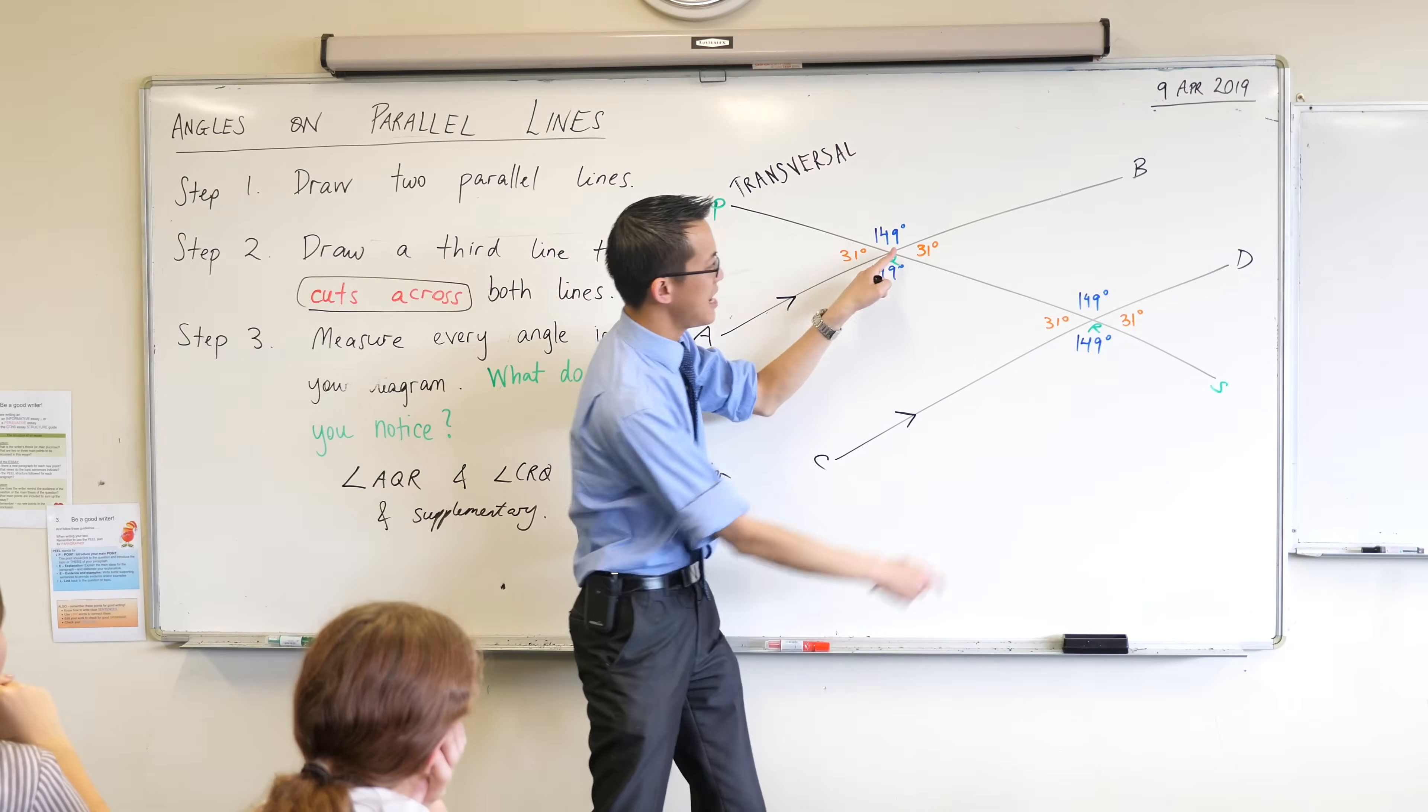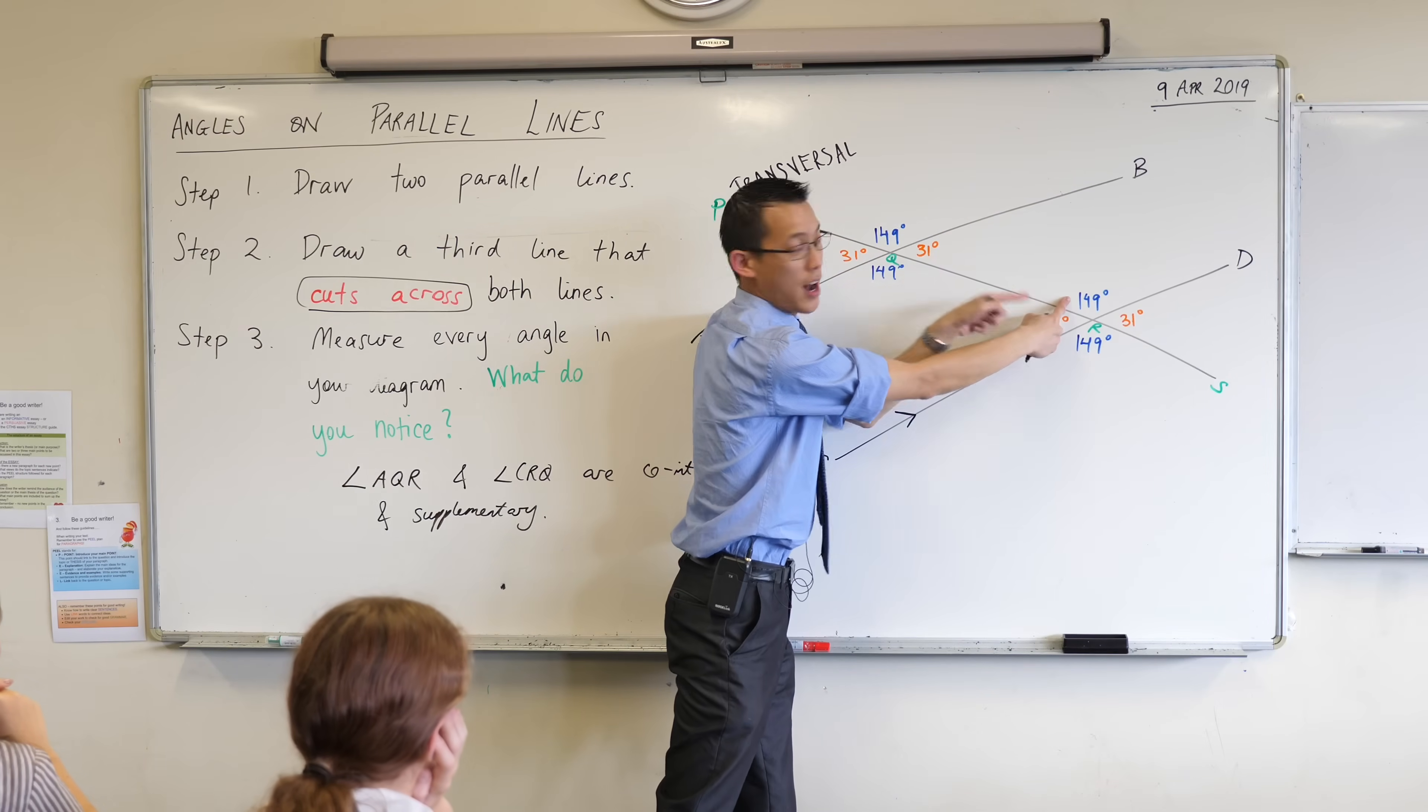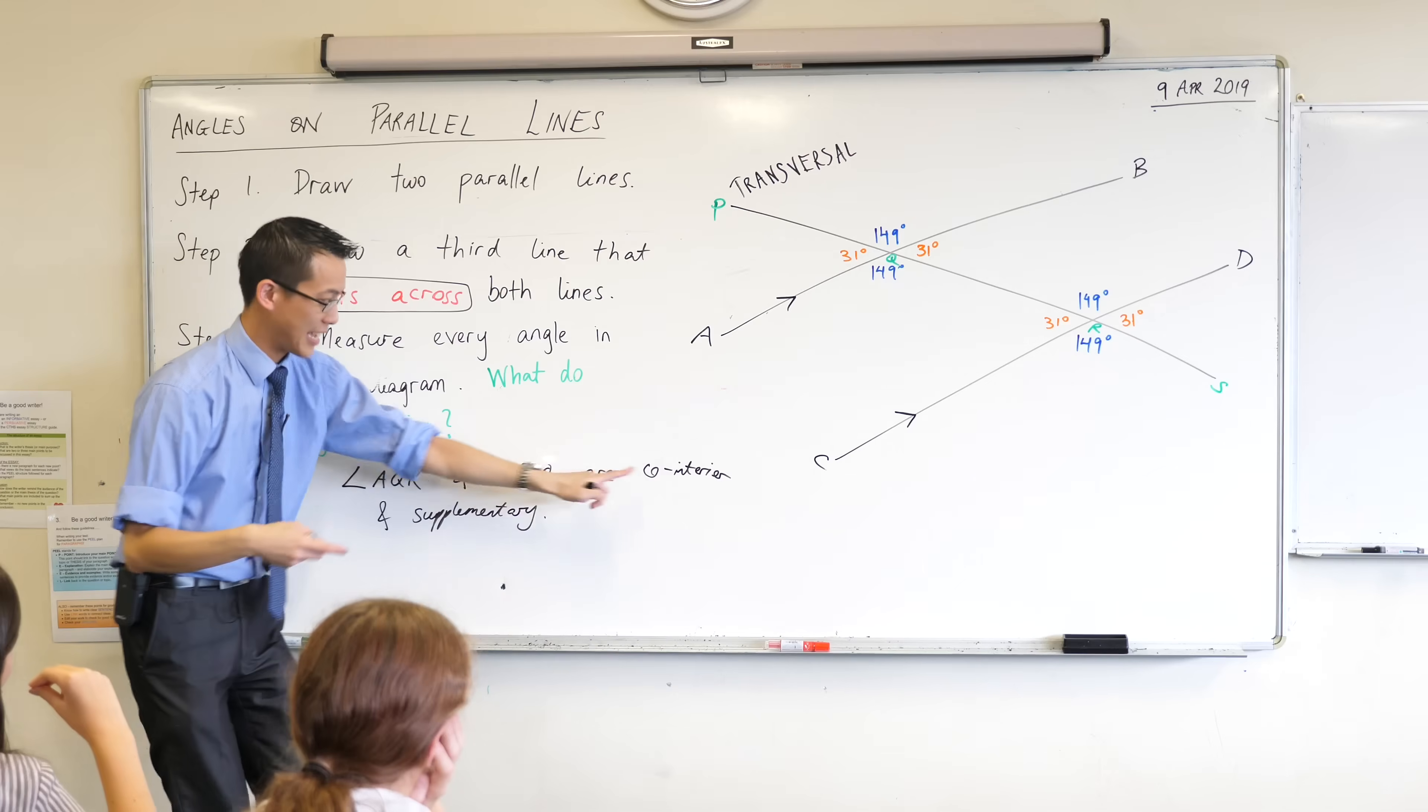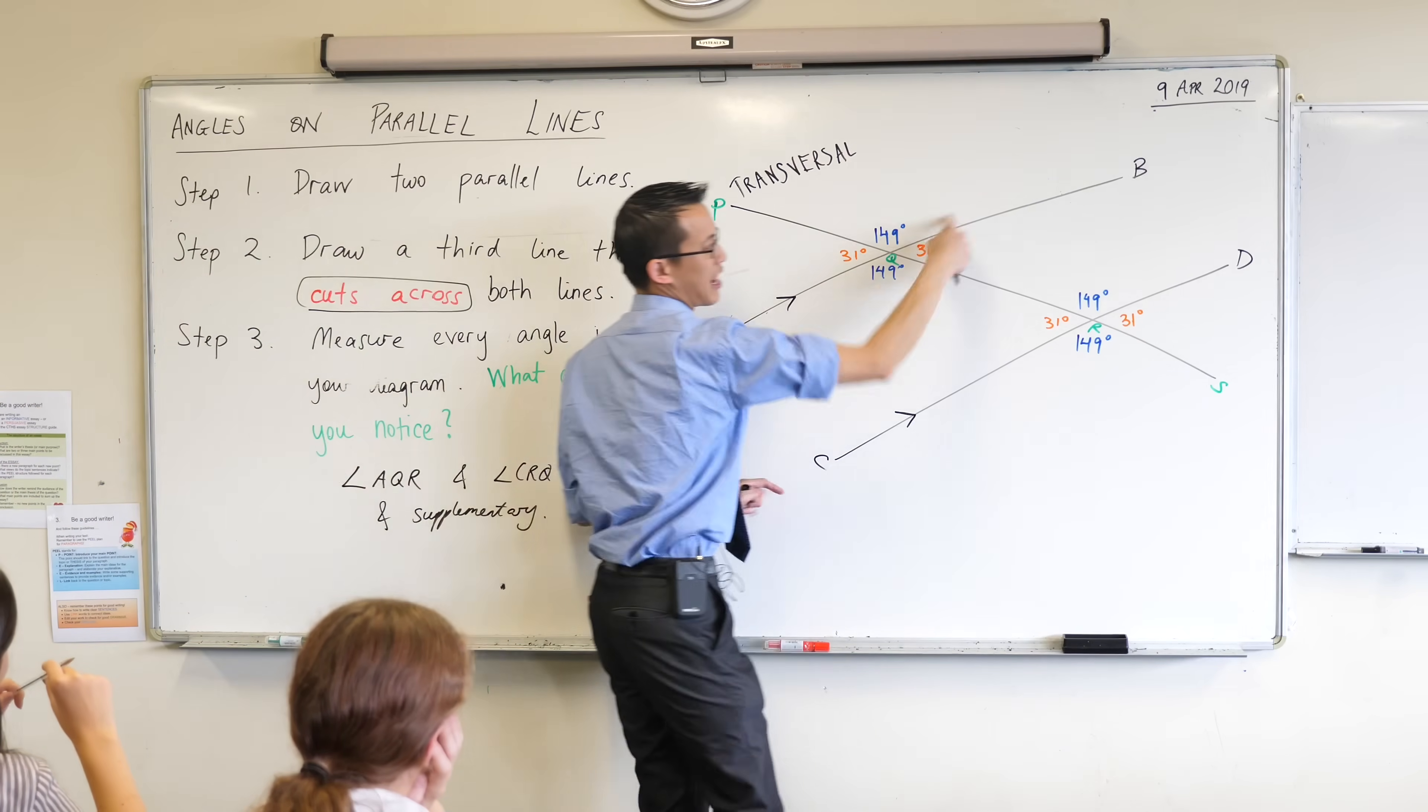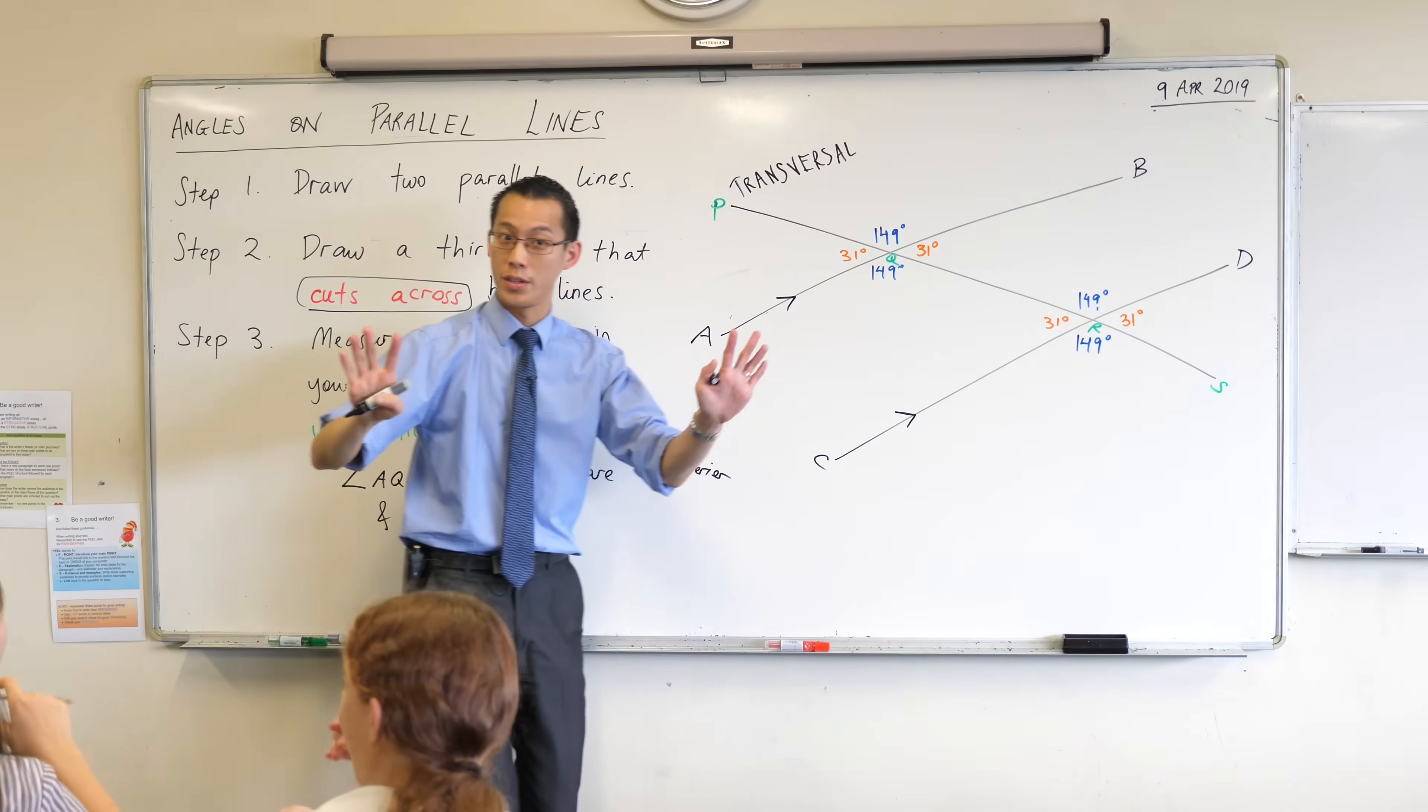DRQ and BQR. DRQ, that's this guy, and BQR, this guy. Great. What makes them co-interior? Can you see they're together inside this kind of little box here? Does that make sense? Right, once you cross over a line, you're like, oh I'm outside, not co-interior anymore. Okay.